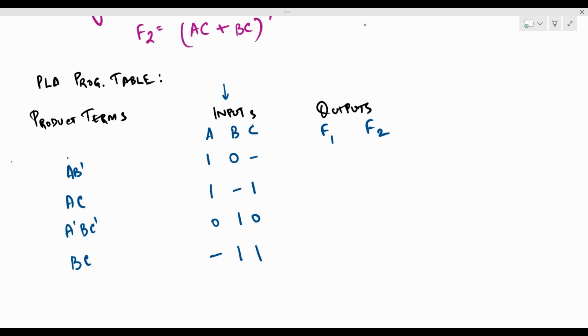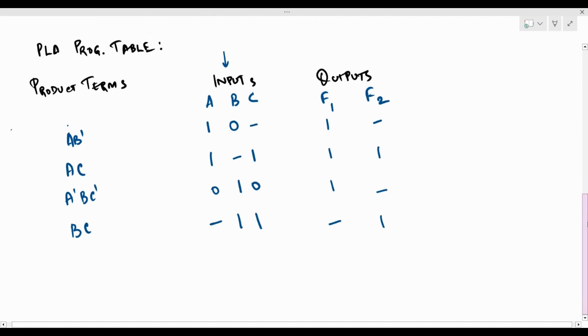Now, out of these product terms, the first three belong to function F1, but not the last term. And the first term does not belong to F2. The second term does. The third term does not belong to F2, but the fourth term does. So in this manner, we are going to develop our PLA programming table. So that is our first step.